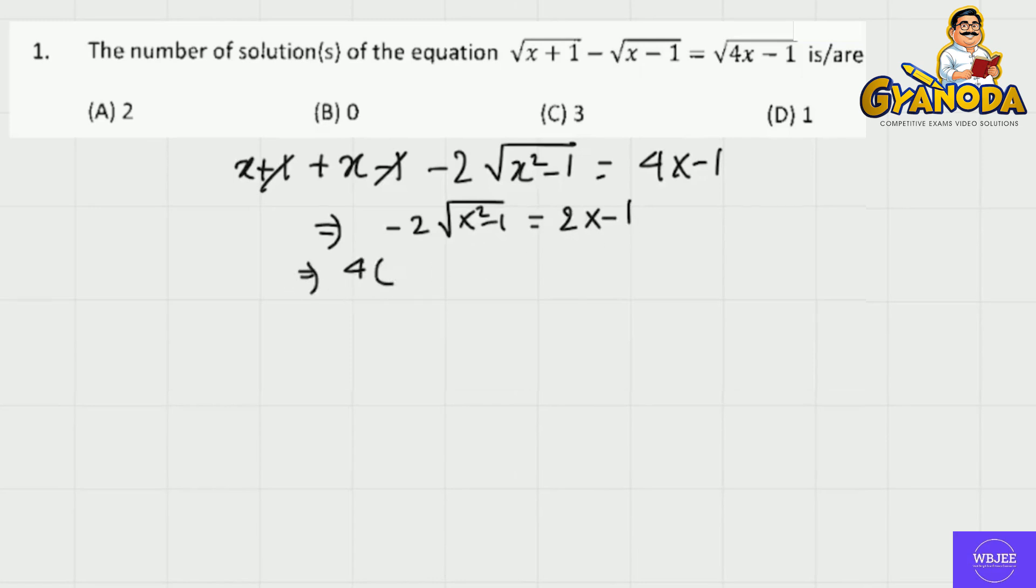This implies 4 times x square minus 1 equals 4 times x square minus 4x plus 1.